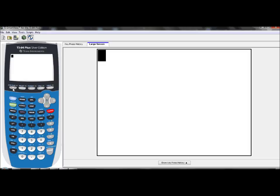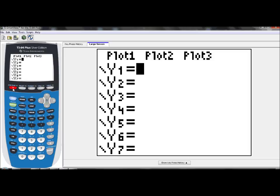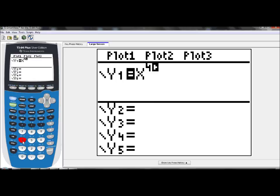So go to y equals first, and let's type in the polynomial function x to the fourth power, minus x cubed, minus 4x squared, plus 1.